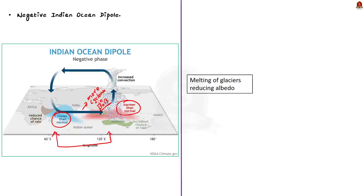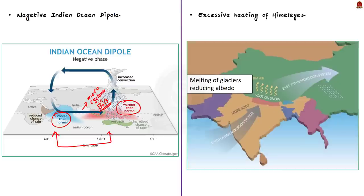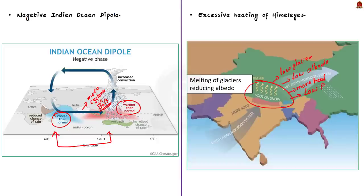The last reason is pre-monsoon heating over the Himalayas. Due to climate change, the glacier cover in the Himalayas has reduced, which reduces the albedo effect. Due to this, there was intense heating of the Himalayas during summer, resulting in the formation of intense low pressure over it. This intense low pressure pulled moisture, land and wind towards India effectively. These are the three main reasons for unpredictable fluctuations in the monsoon this year.